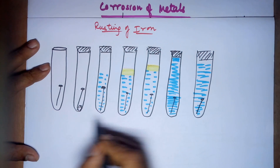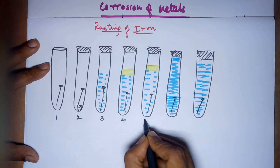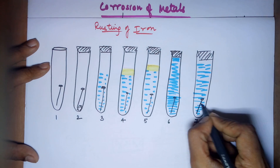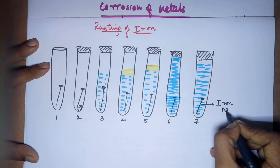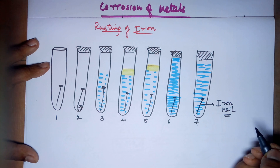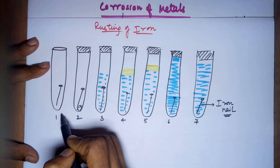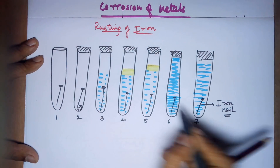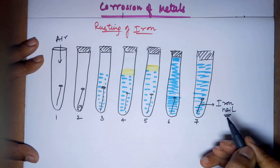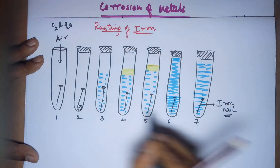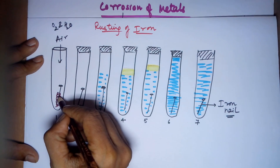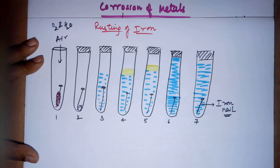I have taken seven test tubes numbered one through seven. In all of them, an iron nail has been added. We are testing whether rusting would happen or not under different conditions. In test tube one, the iron nail is kept in an open test tube. Since it is open, there is exposure to air, giving both oxygen and moisture. Hence, the iron does get rusted — you get a brown coating, which is indicative of rust formation.